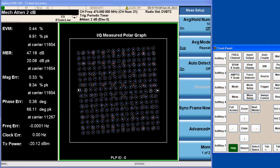we can see the rotated constellation of the DVB-T2 signal. The measured MER is about 48 dB. And we also can get magnitude error, frequency error, phase error, and clock error results.